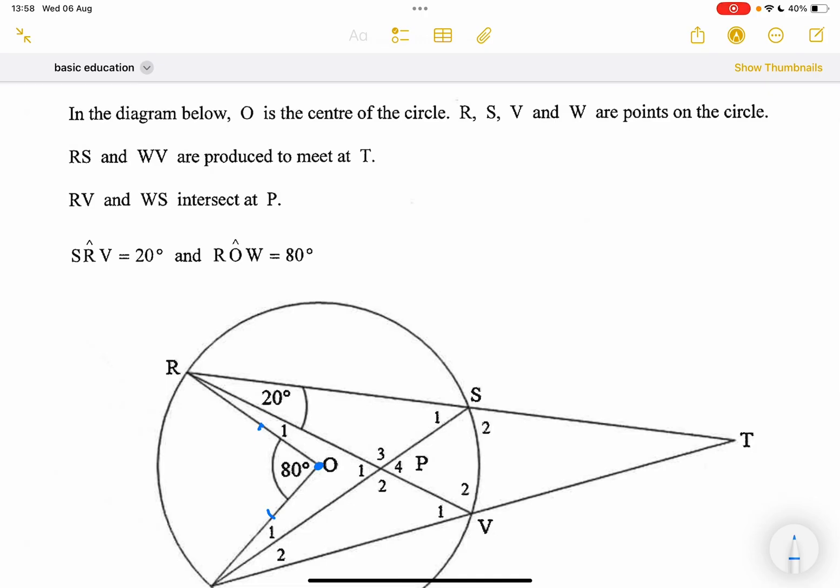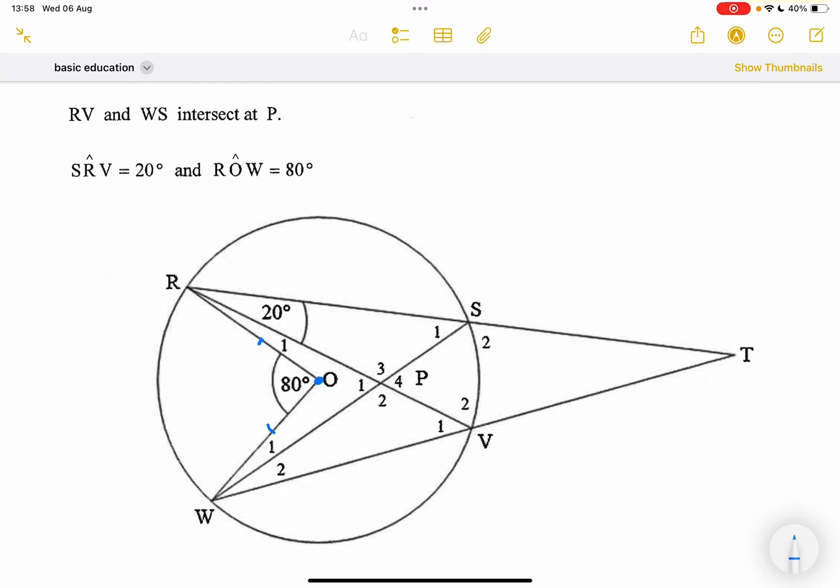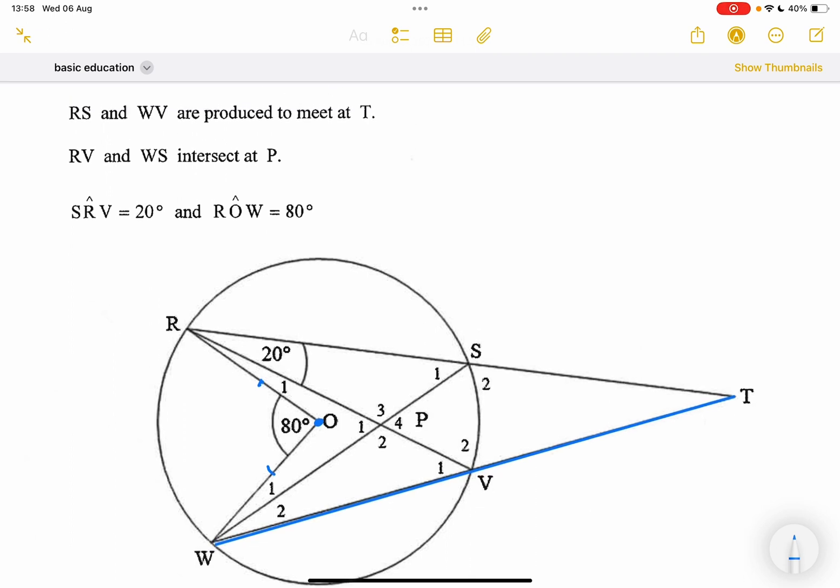They say R, S, and W, V are produced to meet at T. Please remember, whenever they say that a line is produced, what it simply implies is that that is a straight line. That may imply that at some point we might need to use angles on a straight line, exterior angles of a cyclic quad, or even exterior angles of a triangle. They say SRV is 20 degrees and ROW is 80 degrees.